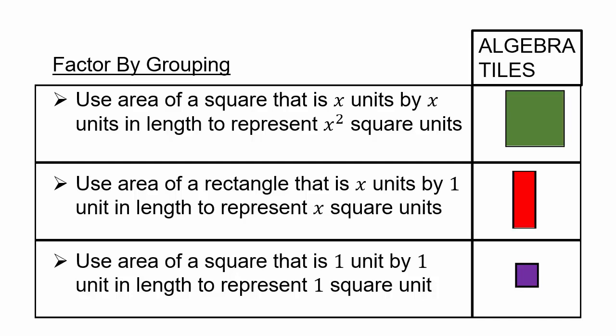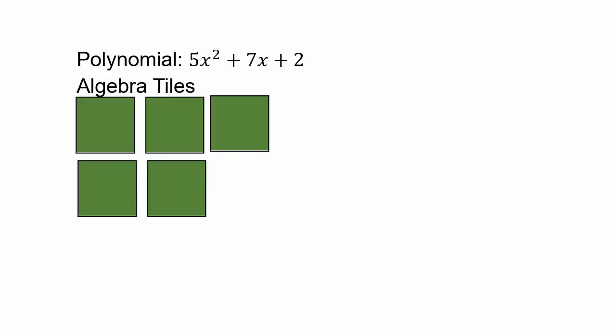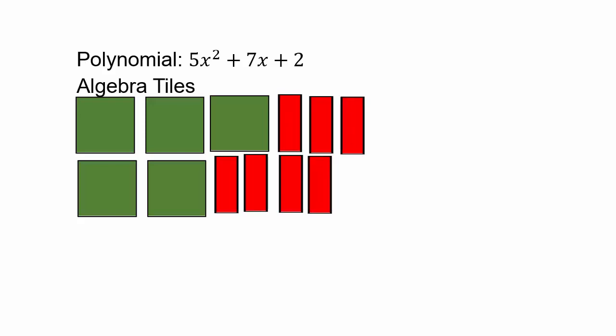Let's see how we can use these algebra tiles to talk about trinomials. For example, if I wanted 5x squared plus 7x plus 2, I have 5 of those green squares plus 7 red rectangles plus 2 of those purple squares. Our algebra tiles represent: 5x squared, 7x, and plus 2. So if you combine all of these pieces together, that total area is represented by the trinomial 5x squared plus 7x plus 2.